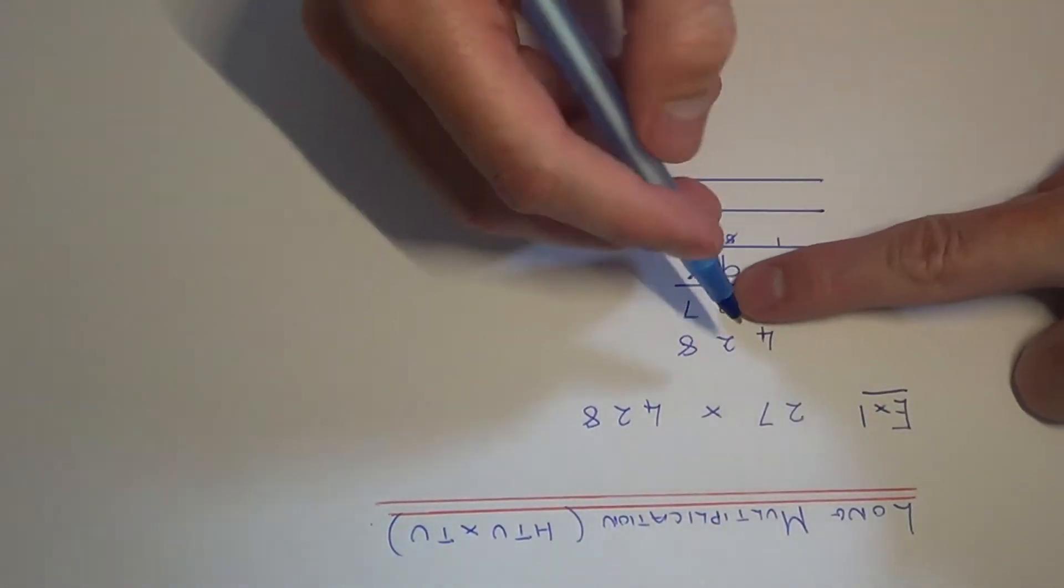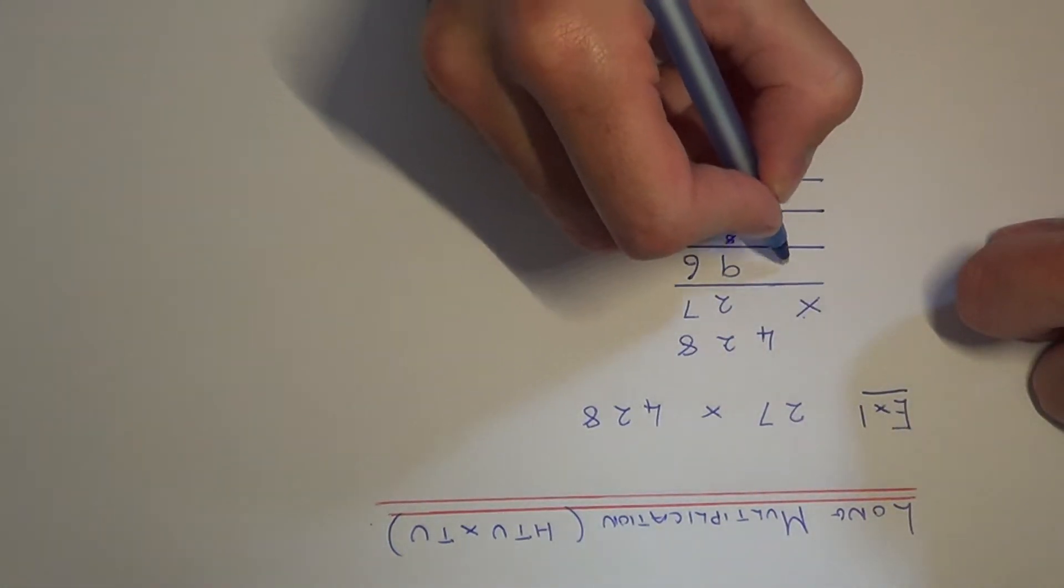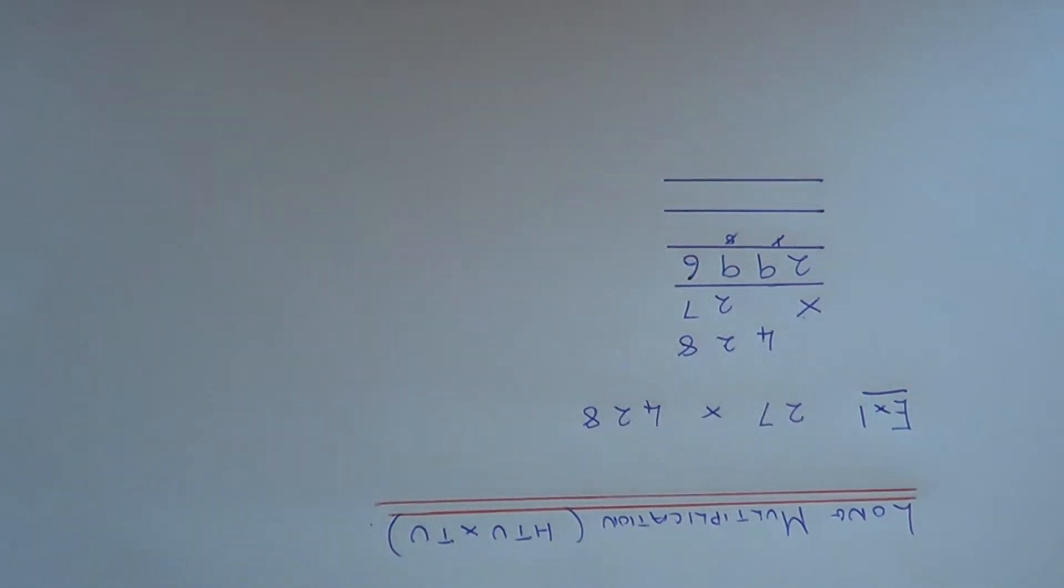And then finally we've got to do 4 times 7 which is 28. Plus the 1 underneath makes 29. So that's our first line done.